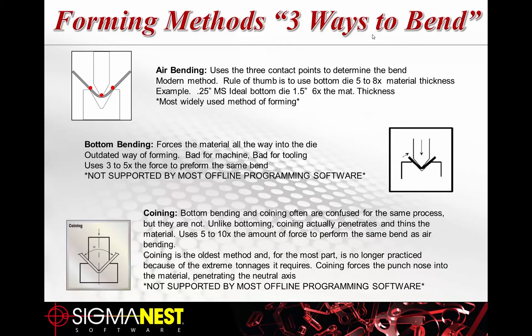Air bending is the most common method used today. It uses three points of contact to determine the bend, it's the most modern method, easier on the machine, and uses less tonnage. The rule of thumb is to use six times the material thickness — so for quarter-inch mild steel wanting a quarter-inch radius, you'd use a one-and-a-half-inch bottom die. It's the most widely used method nowadays.